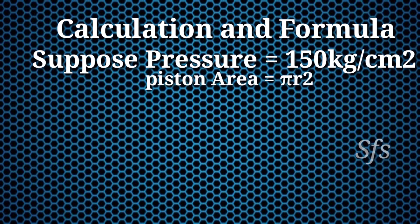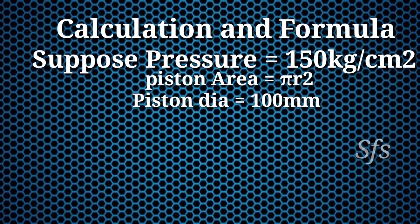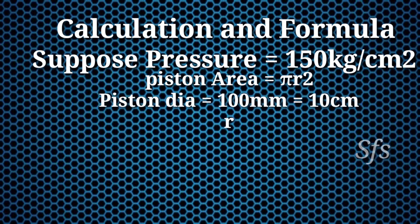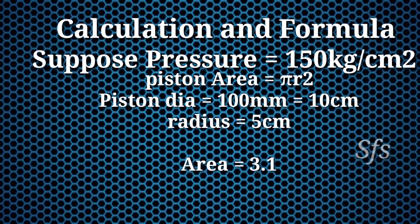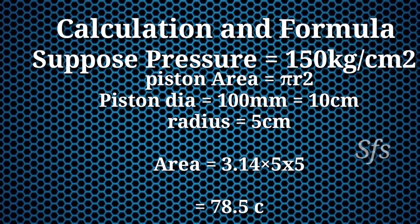Suppose the pressure of fluid is 150 kg per centimeter square. Now we calculate piston area by formula π r squared. Suppose piston diameter is 100 mm, which equals 10 cm, so radius is 5 cm. By formula π r squared, where π equals 3.14, we get answer 78.5 cm squared.